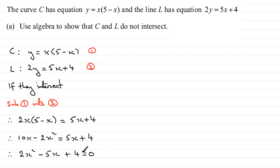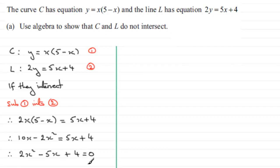Normally for quadratic equations I would either use the quadratic formula or try and factorise it. Now, we want to show that the two lines do not intersect, so in order for that to happen there should be no solution to this quadratic equation — no roots. The thing that determines the nature of the roots is something called the discriminant.